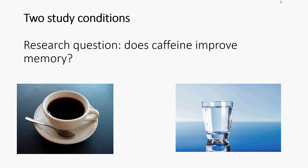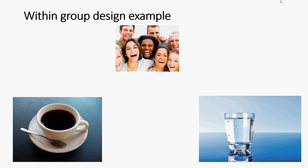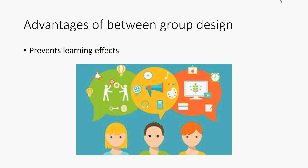Here's a simple study with two conditions. The research question is: does caffeine improve memory? The hypothesis is that caffeine will boost memory, so memory test scores will be higher for those in the caffeine condition versus the water condition. In a between groups design, two separate groups are used — one for caffeine, one for water. In a within groups design, the same group is allocated to the caffeine condition first, then the water condition a week later.